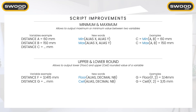We also improved the script with two main improvements. The first is minimum and maximum functions — these allow you to output the maximum or minimum from two values. For example, with two distance variables A and B, you can use the new keyword to get the maximum or minimum result directly in distance C. We also created new keywords for upper and lower rounding: floor outputs the lower rounded value, and ceil outputs the upper rounded value, with the number of decimals you specify.